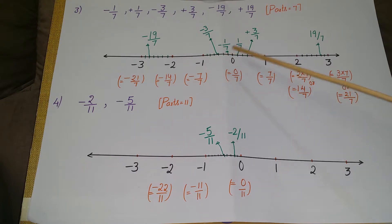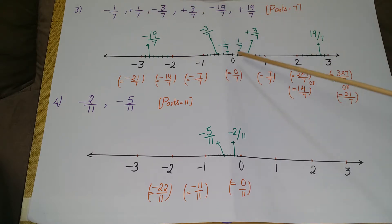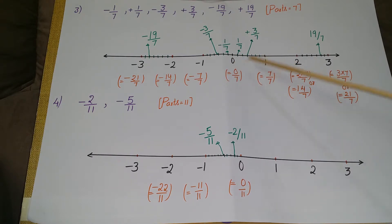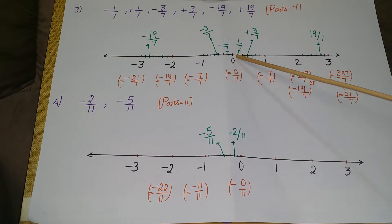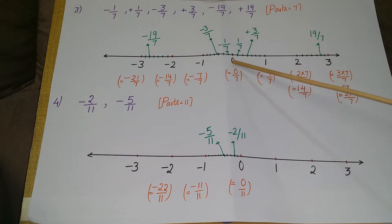Now show these rational numbers on the number line. The first one is 1/7, a positive number. I have divided 0 to 1 into 7 parts, so 1/7 will come between 0 and 1 — this first mark is 1/7.